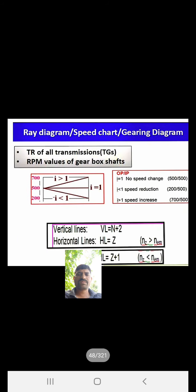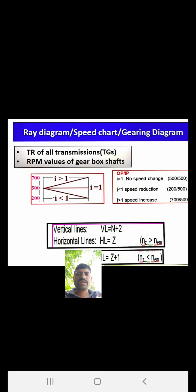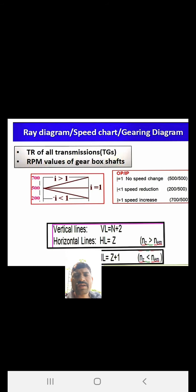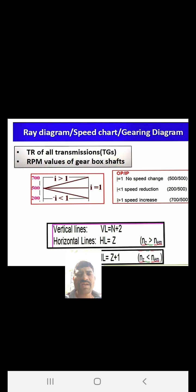So i_max ≤ 2 and i_min ≥ 0.25 (or 1/4). The transmission ratio of all gearbox shafts: when i > 1 the speed increases; when i = 1 there is no speed change; when i < 1 the speed decreases. Going left to right upward means speed increases; going downward means speed reduction.